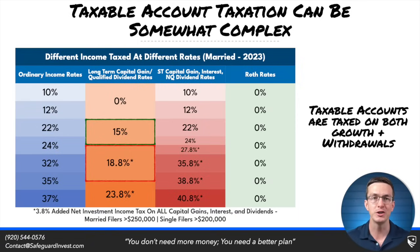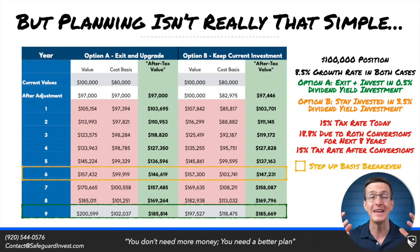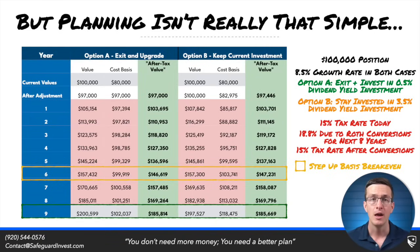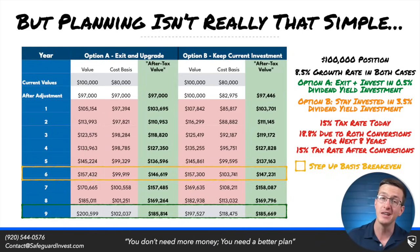Let's look at the same situation with a few more complexities. Let's say this investor is performing Roth conversions for eight years at the start of retirement to minimize future tax liabilities from RMDs. Because of this, their capital gains rate is pushed up to 18.8% rather than 15%, highlighted in red. The cost of tax inefficiency on an ongoing basis will be higher during those eight years. This moves the breakevens up significantly — the step-up in basis breakeven moves from year 8 to year 6, and the after-tax breakeven moves from year 15 all the way up to year 9.